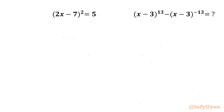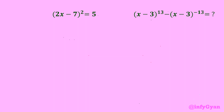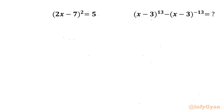Hello my dear friends, welcome back to InfiGyan. In this video we have another very interesting question from algebra. We have to evaluate (x-3)^13 minus (x-3)^(-13), given the equation (2x-7)² = 5.